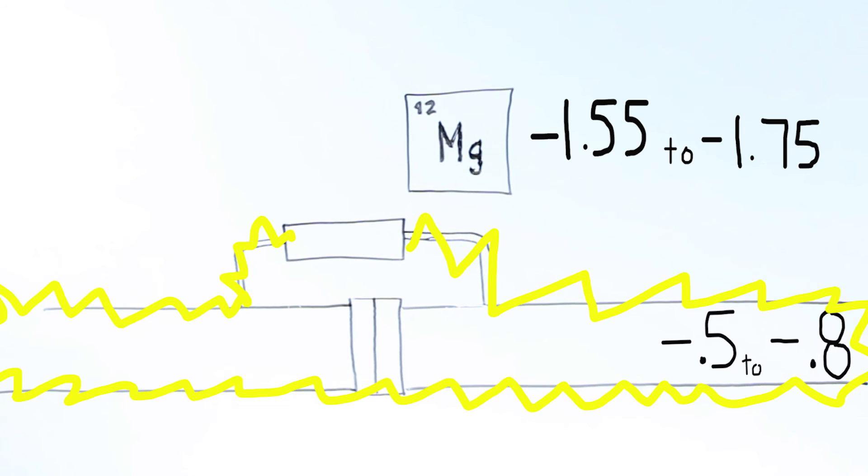When two metals are connected together, the more active metal becomes an anode and corrodes to protect the more noble metal, or cathode. So when steel and magnesium are connected, the magnesium corrodes while the steel remains safe.